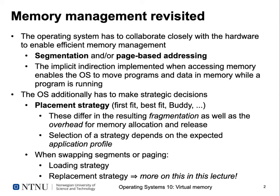To do this, the operating system has to make a number of strategic decisions. First, it has to decide on a placement strategy — we've seen several like first fit, best fit, or the buddy algorithm — and these approaches differ in the resulting fragmentation and overhead for memory allocation and release. There is no ideal strategy for all use cases; the selection depends on the expected profile of your application. When swapping segments or paging, you also need a loading strategy and a replacement strategy.